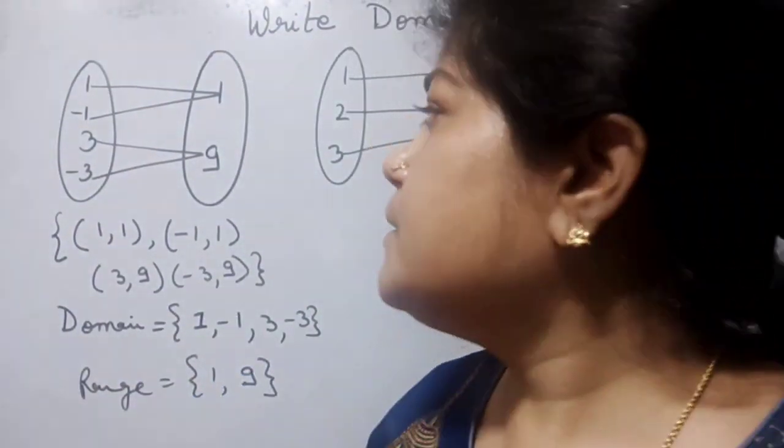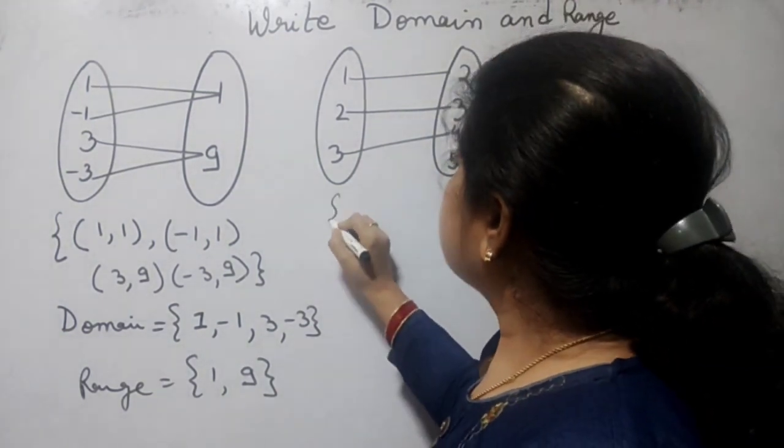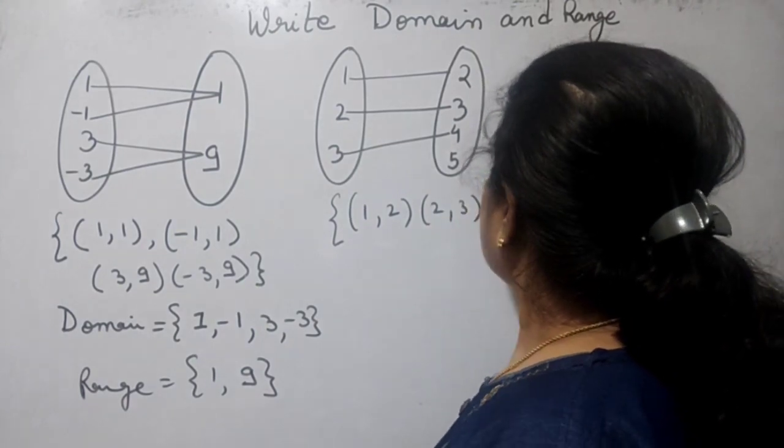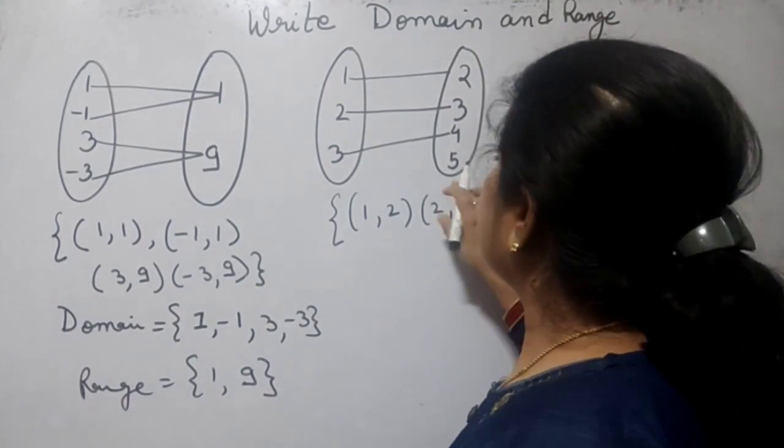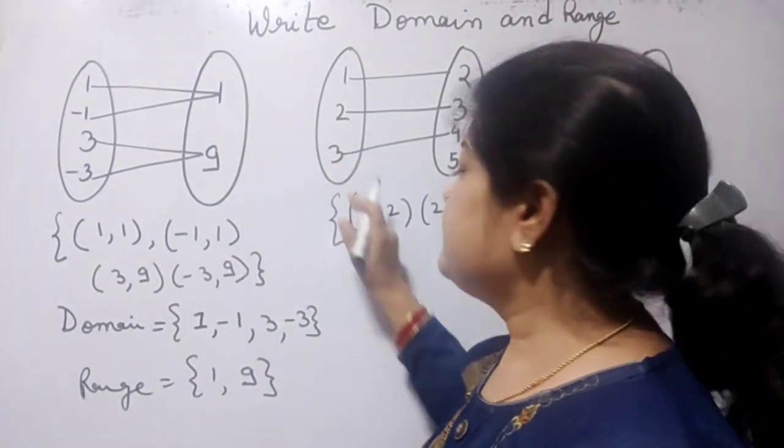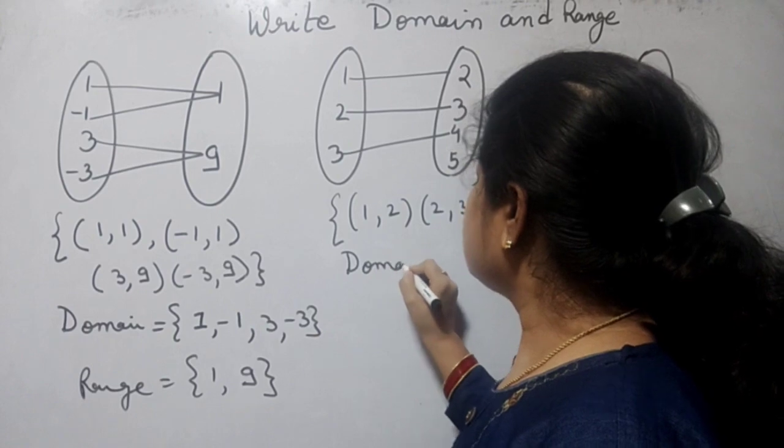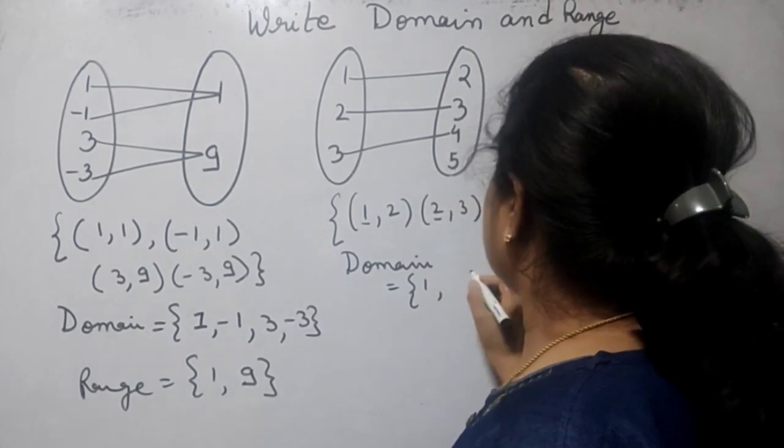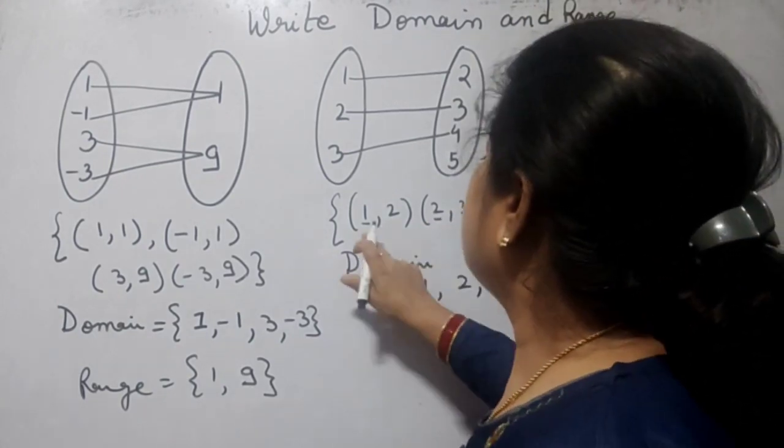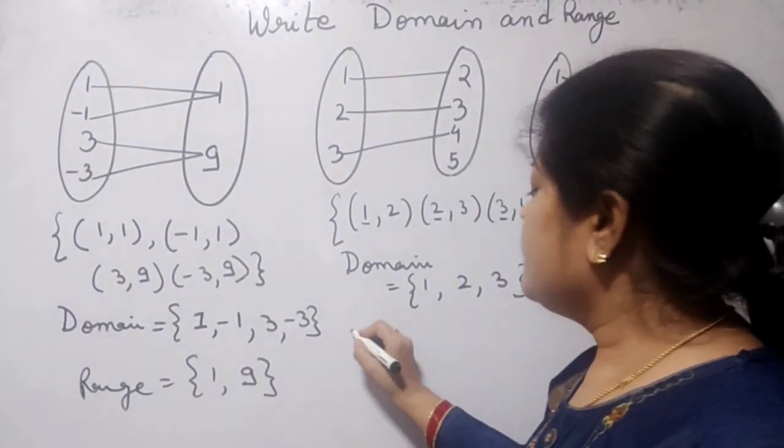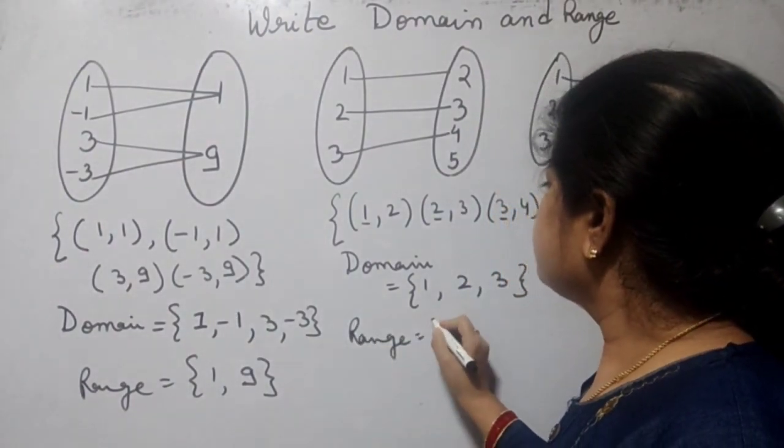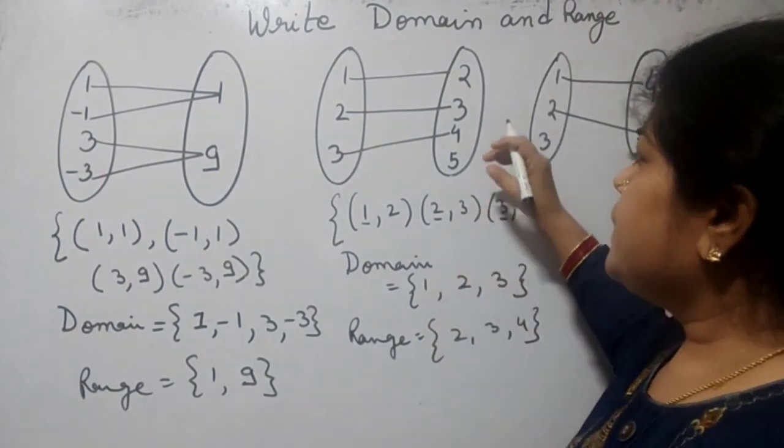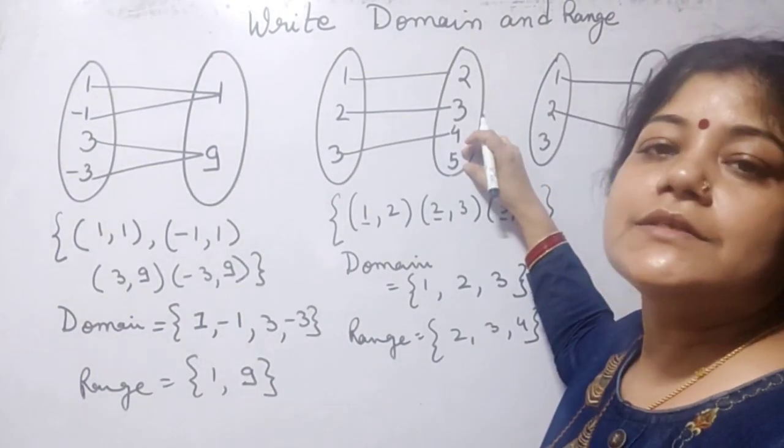Now the next one. Similarly, for this set the function becomes 1 comma 2, 2 comma 3, 3 comma 4. Now there is no element for 5 in this first set, so here domain becomes 1, 2, 3 - the numbers which are at the x positions. Now range becomes 2, 3, 4. If there is any element left in the set B, it doesn't have any problem.